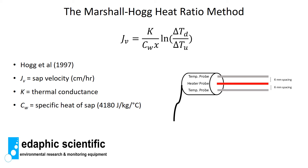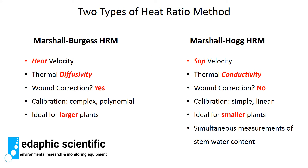The Marshall-Hogg heat ratio method is slightly different from the Marshall-Burgess heat ratio method. With the Marshall-Hogg method we are interested in sap velocity, and the equation includes thermal conductance (capital K) divided by the specific heat of sap (the cw term), multiplied by the distance and the log of the downstream to upstream temperature rise. Both equations trace back to Marshall 1958, but Burgess developed one variant and Hogg developed the other.